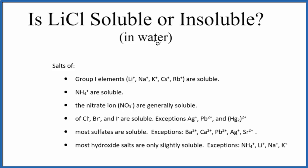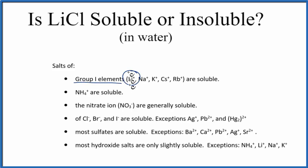And there are two or three ways that we can know that. The first way is we can look at the solubility rules. These are a set of rules that you memorize that tell you whether a substance like LiCl is soluble or insoluble when you put it in water. So as we look at our rules, it says that group one elements like this lithium ion here, Li+, they are soluble. And even if we look down further, most of the chloride ions are soluble with just a few exceptions.